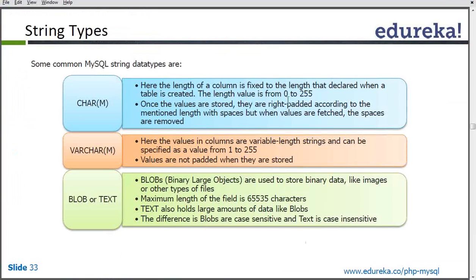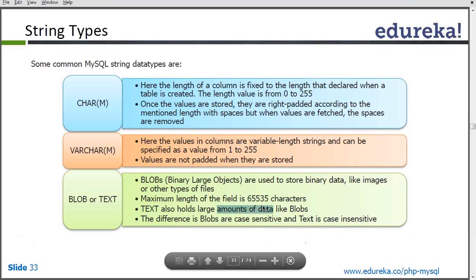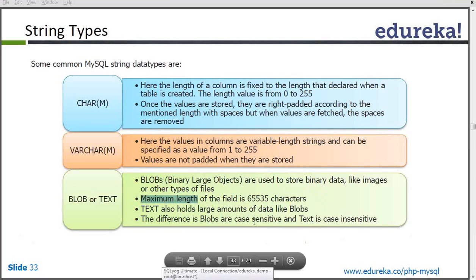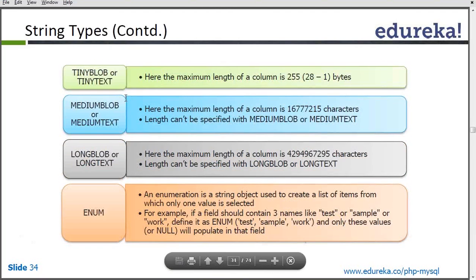The length of a CHAR/VARCHAR value is 0 to 255, so 255 characters can be the maximum, and it can have 1 to 255 characters. BLOB is basically a data type that is used to save either binary data, or some kind of image data, or if we want to save files into the database rather than saving them on our web server. In that case we have to keep the data type of that particular field as BLOB or TEXT. We also have tiny blob, medium blob, medium text, and long blob — the range of the value increases as we go from tiny to medium to long blob.